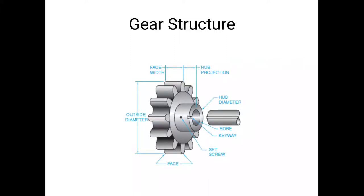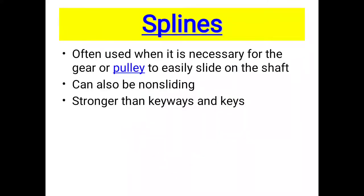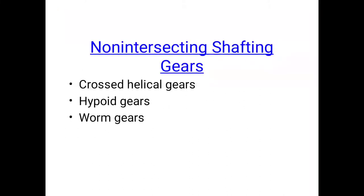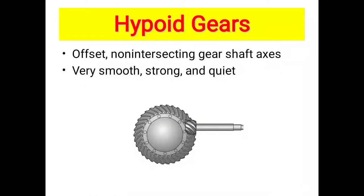Bore, keyway for locking purpose, hub diameter, and hub projections. Splines: often used when necessary for the gear or pulley to easily slide on the shaft. Can also be non-sliding, stronger than keyways and keys. Intersecting shafting gears: bevel gears and face gears. Face gears: combination of bevel gear and spur pinion or bevel gear and helical pinion. Require less mounting accuracy, carry less load.